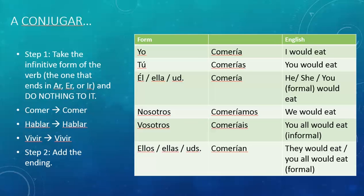So do these conjugations — it's pretty simple. Step one: take the infinitive form of the verb, that's the one that ends in AR, ER, or IR, and do absolutely nothing to it. You don't have to drop off the AR, the ER, or the IR — you just leave it the way it is. Comer stays comer. Hablar stays hablar. Vivir stays vivir. Take nothing off.